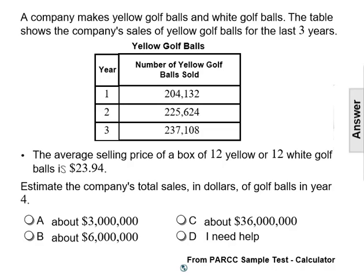A company makes yellow golf balls and white golf balls. The table shows the company's sales of yellow golf balls for the last three years. The average selling price of a box of 12 yellow or 12 white golf balls is $23.94. Estimate the company's total sales in dollars of golf balls in year four.